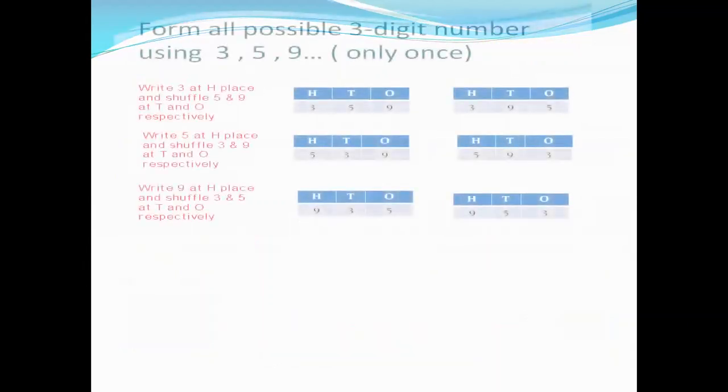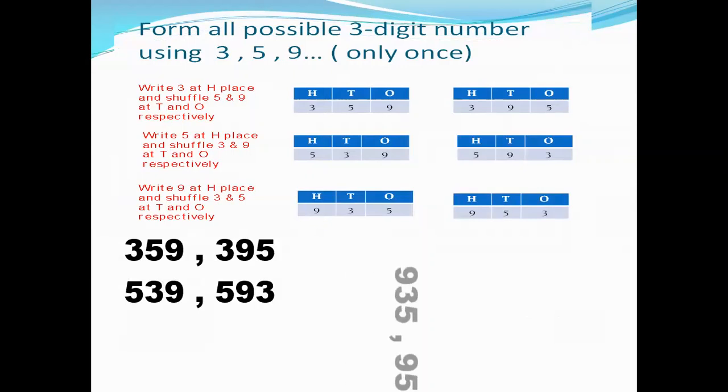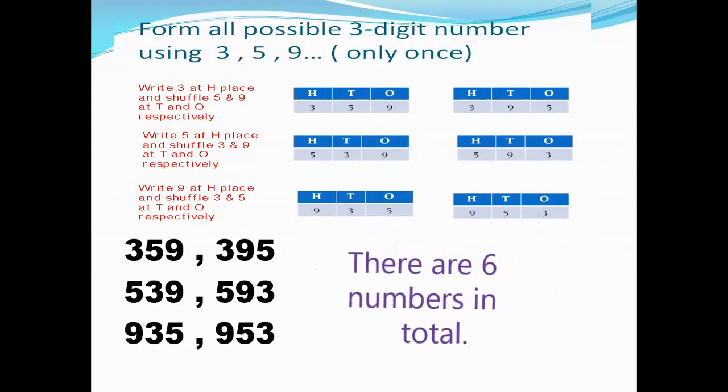Now let's take a look at the numbers that we have found. One is 359 and 395, 539, 593. And with 9 at hundreds place, it is 935 and 953. So there are six numbers in total.